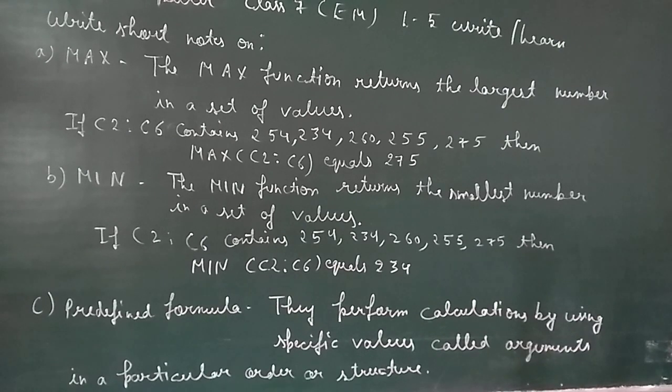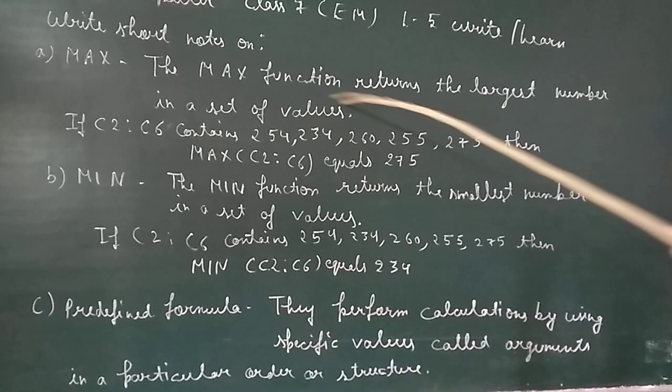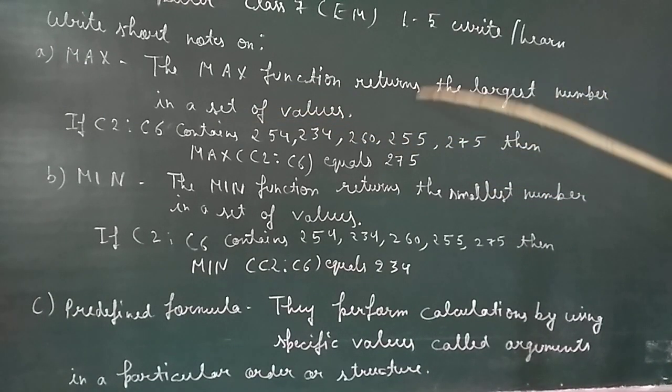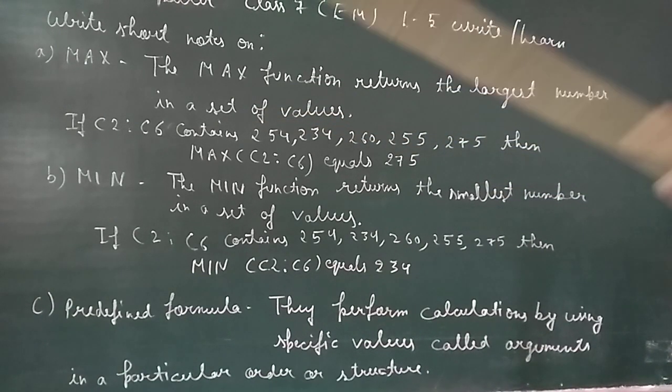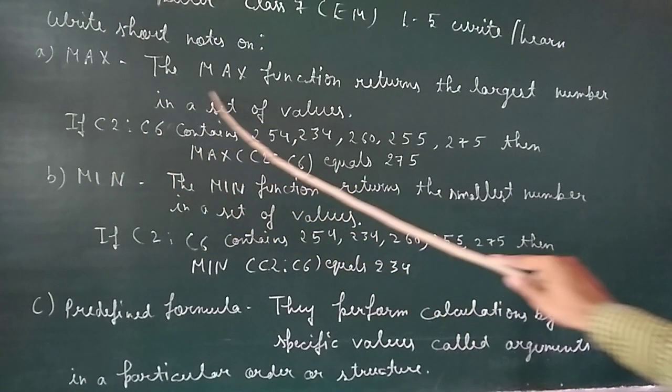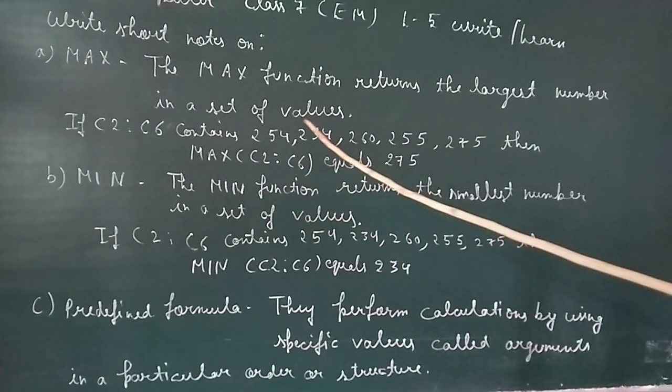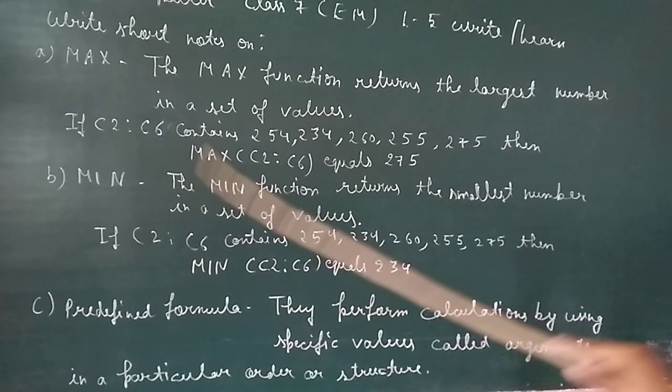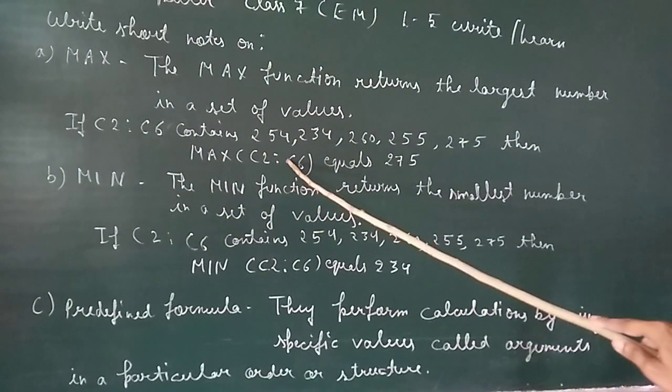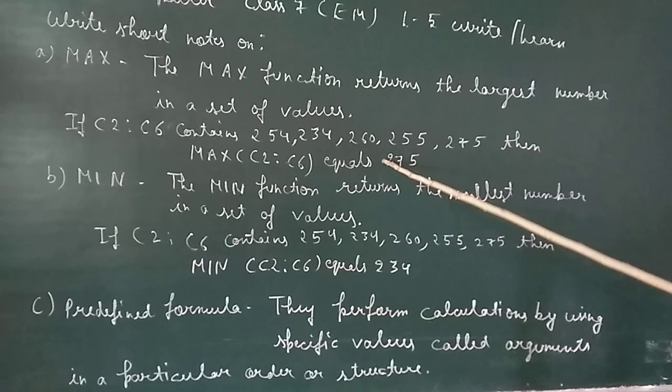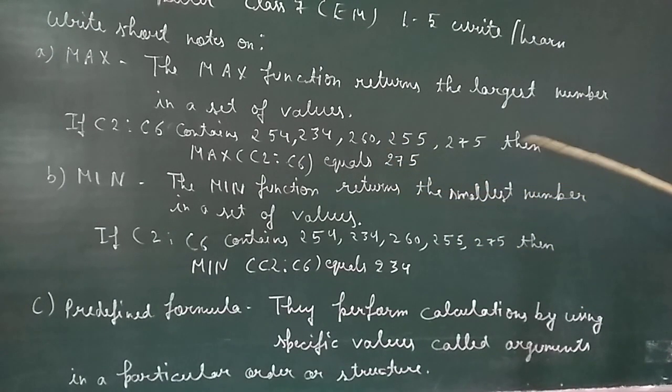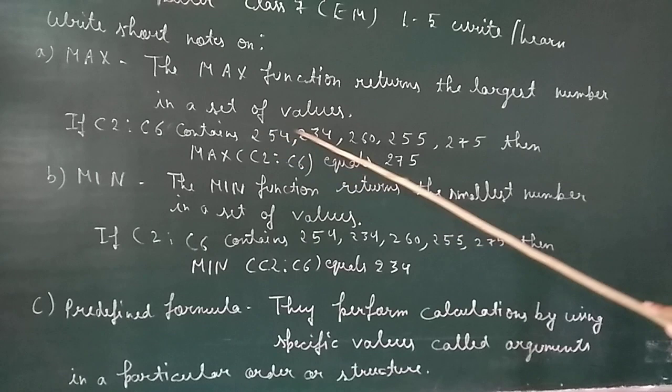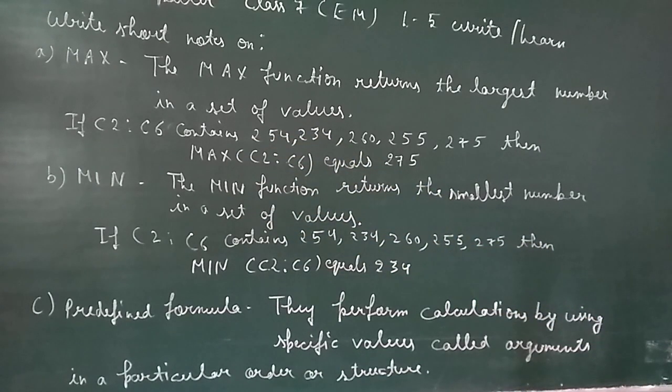The maximum function returns the largest number in a set of values. If you have cell references or addresses given to you, like C6 containing numbers 54, 34, 60, 55, and 75, then the maximum number from C6 is 75.